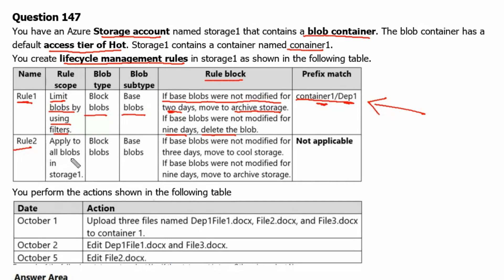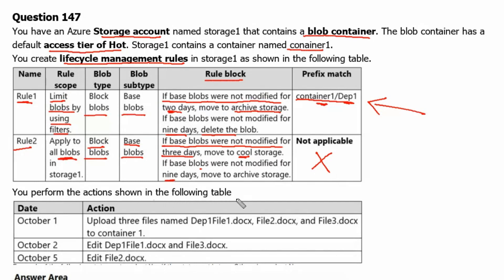Rule number 2 applies on all the blobs in the storage account. Blob types are block blobs and blob subtype is base blobs. Condition 1: if base blobs were not modified for 3 days, move to cool storage. Condition 2: if base blobs were not modified for 9 days, move to archive storage. There is no filter applicable here.